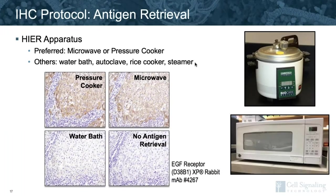The apparatus used for heat-induced epitope retrieval can also impact staining results. A pressure cooker provides the most consistent results. The microwave works well, is accessible in many labs, and is the apparatus we use most frequently. We have calibrated our microwaves in-house and use a set protocol each time to provide consistent retrieval. A water bath may not provide sufficient retrieval and so is not recommended.